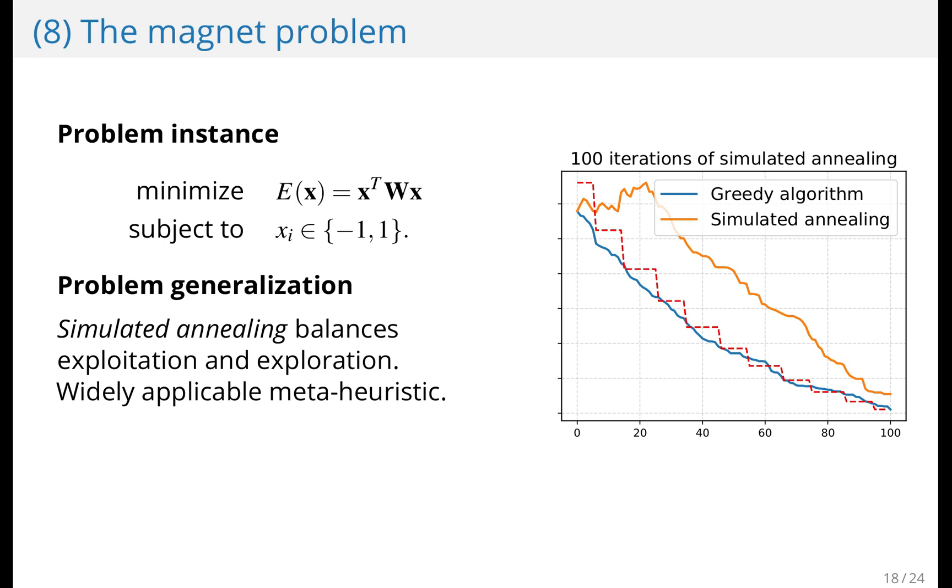But then it really just goes down. Because as time progresses, the chance of accepting a worse solution goes down and it becomes a greedy search. The idea is to balance exploitation and exploration. So initially you explore the search space more, perhaps you accept some subpar solutions. And as time goes, you really try to move down into better solutions.